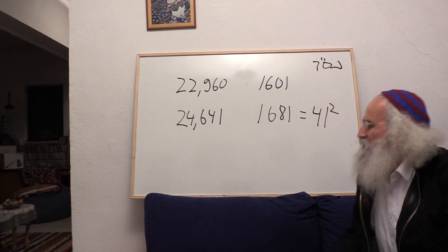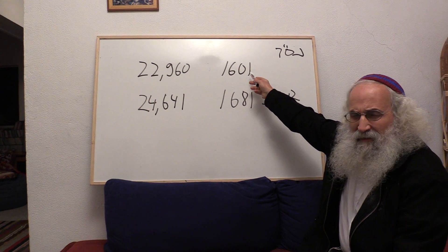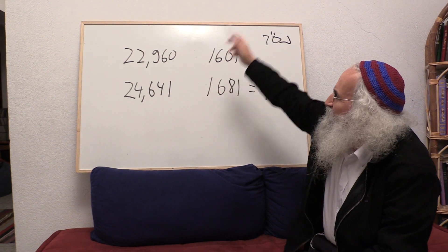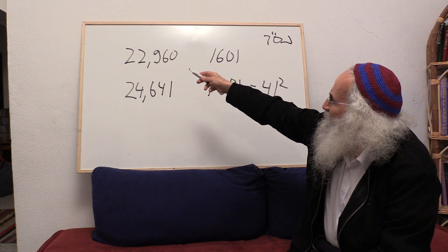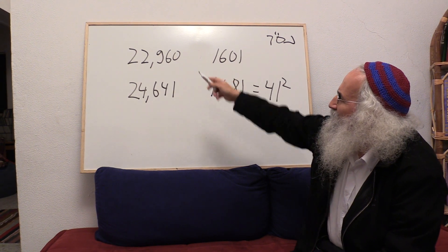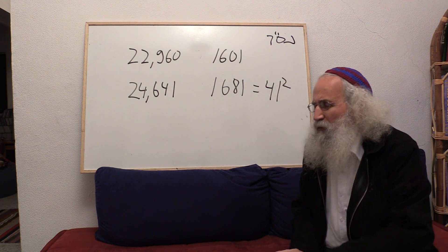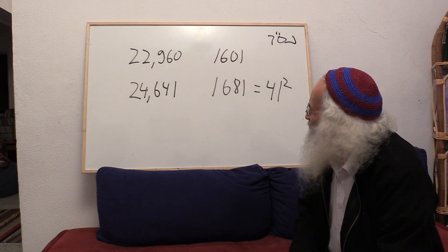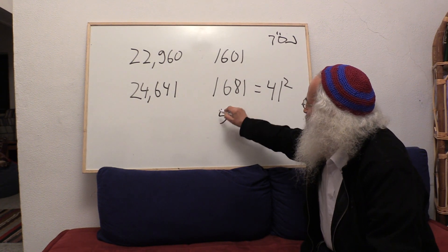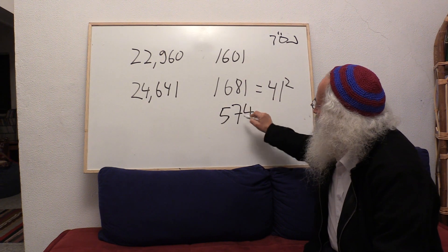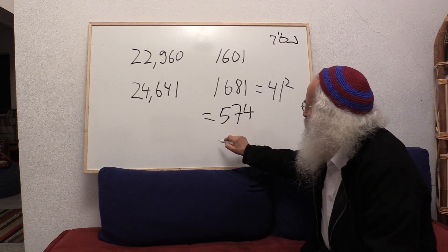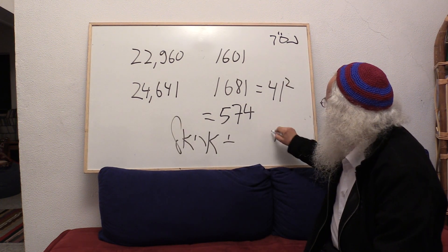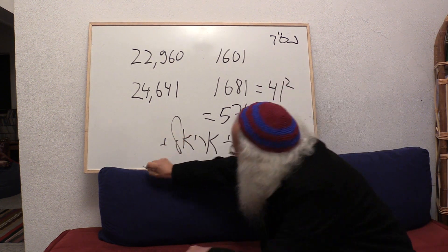About the average of all the generations until generation number 40: all the generations together, all the numbers that correspond to all the generations, was 22,960. And when we split it by 40, we receive the average value of each one of the generations, which was the number 574 — that, like we said, equals Ariel plus Menachem Mendel.